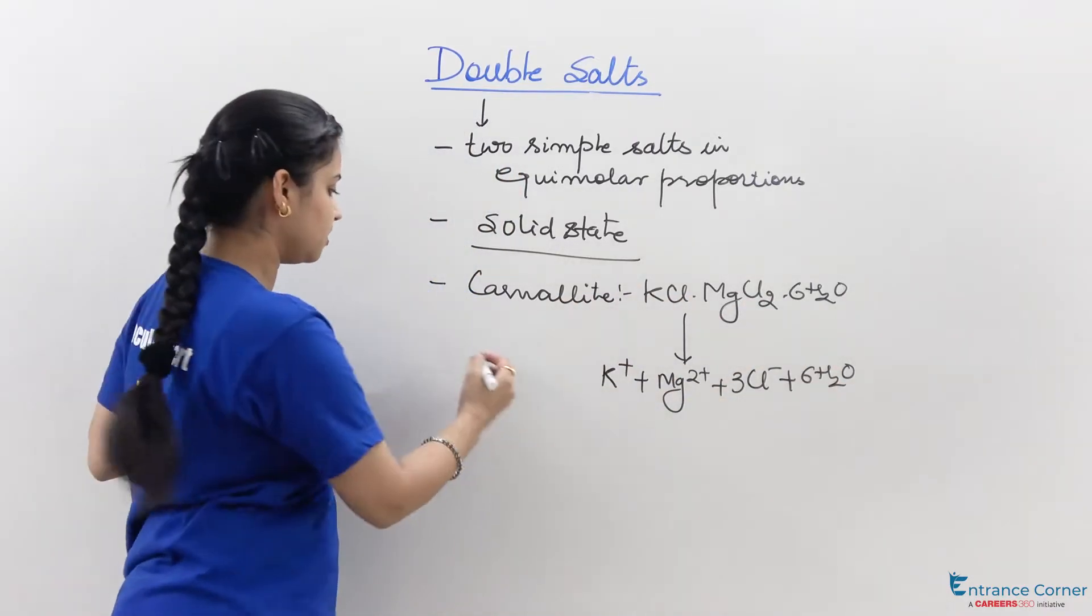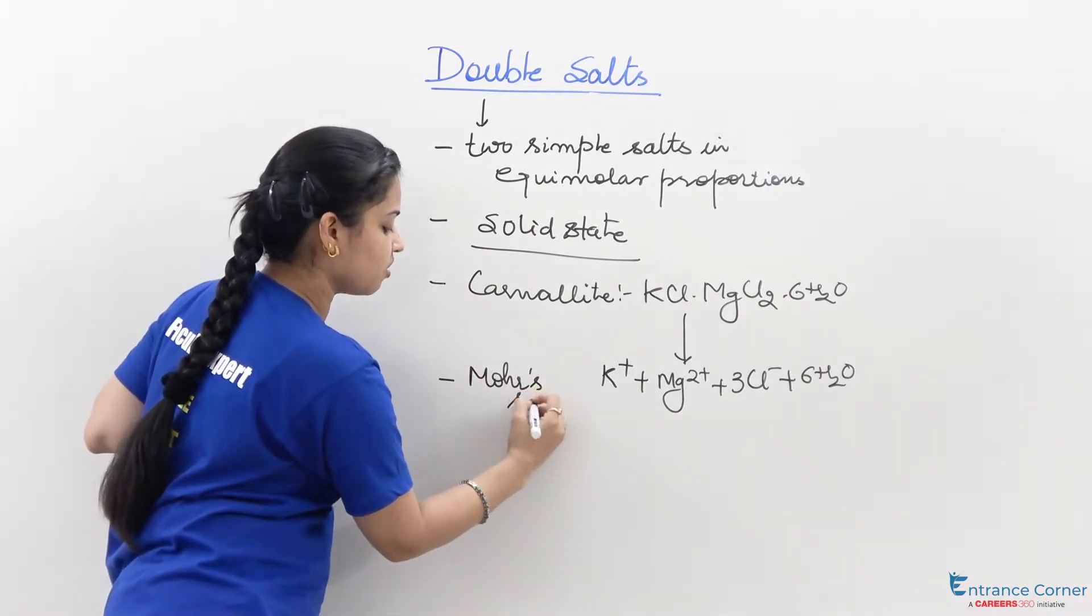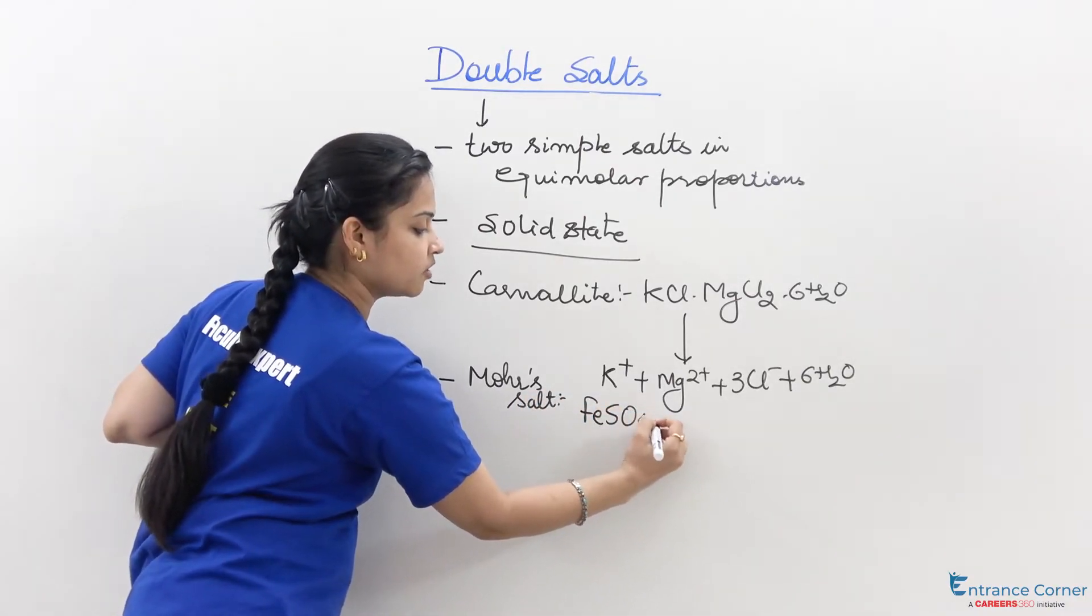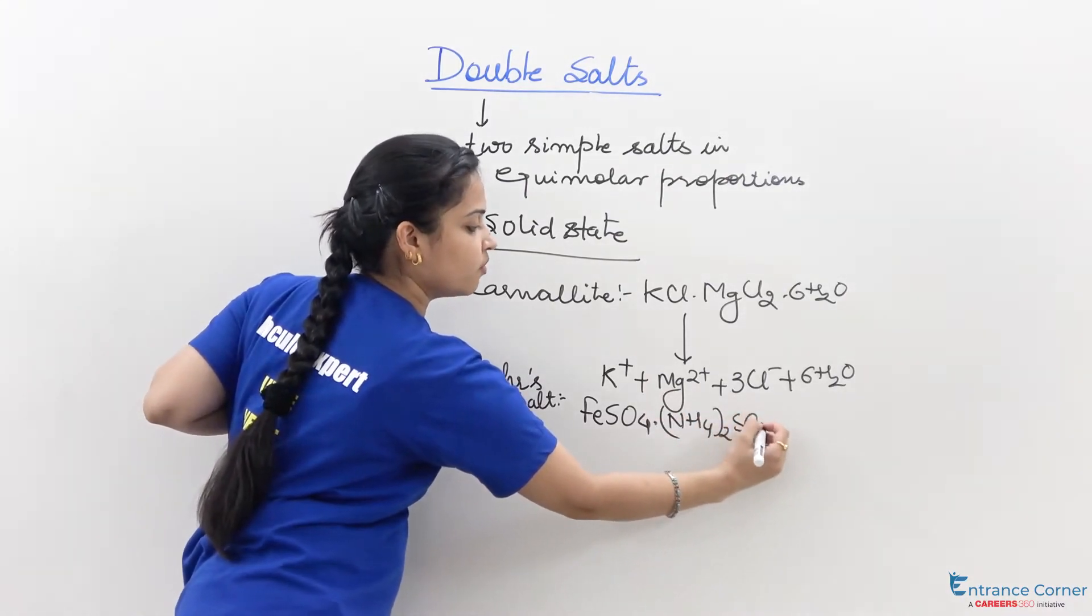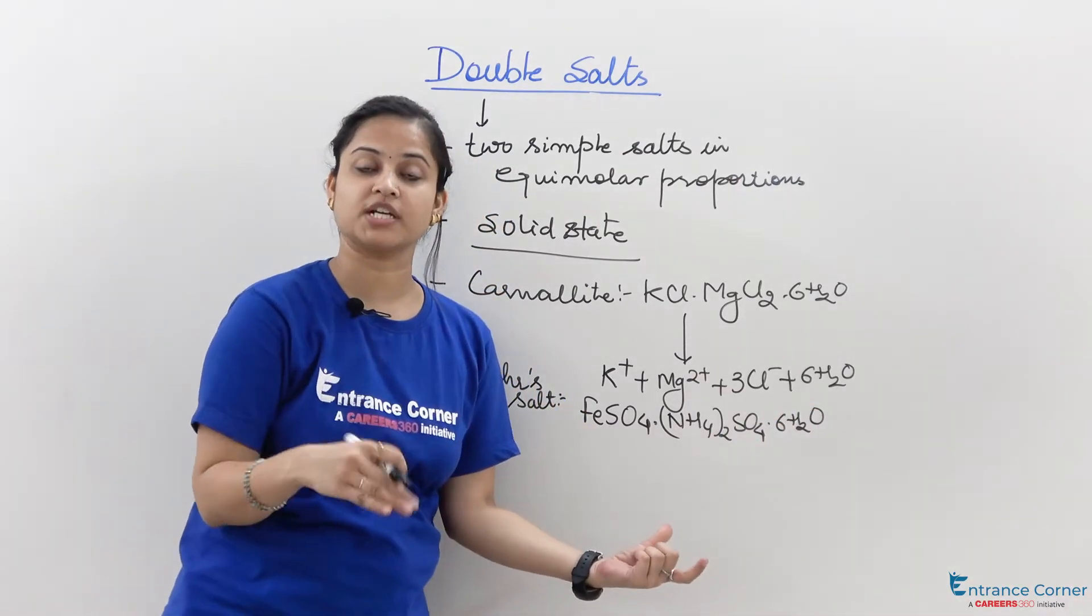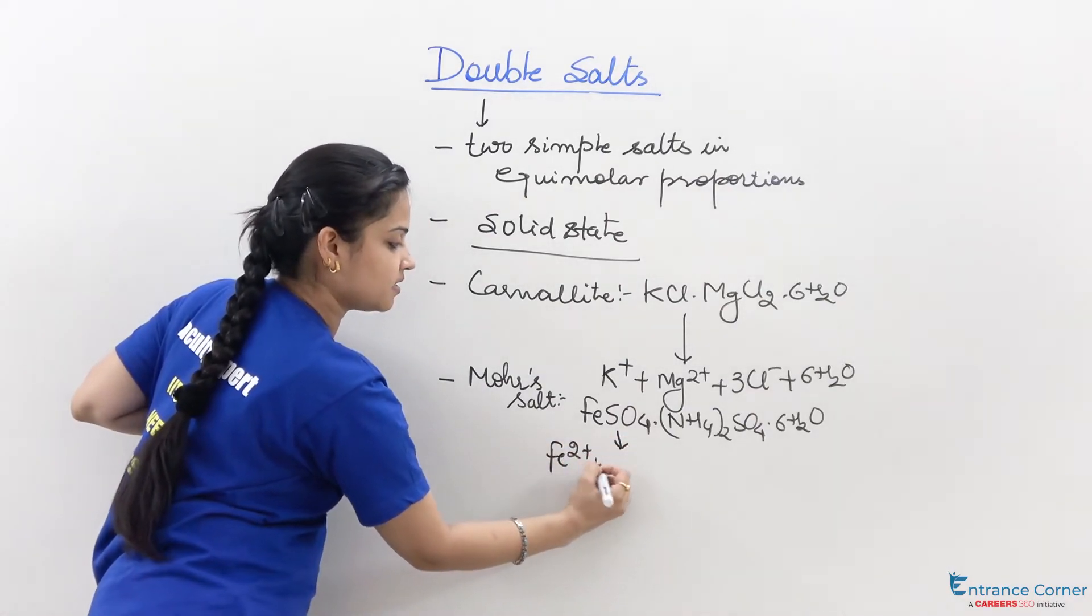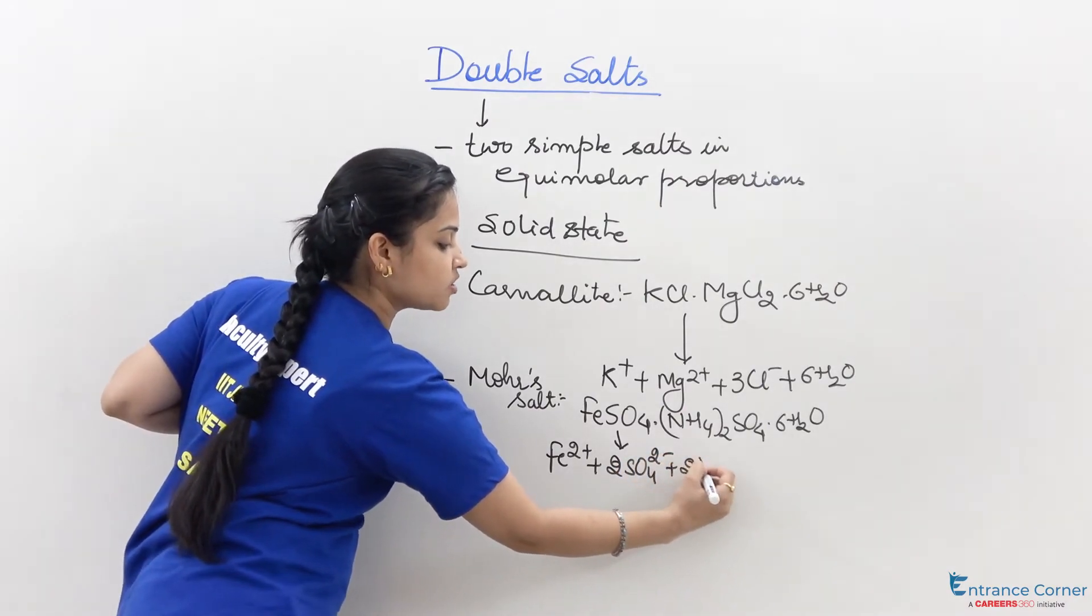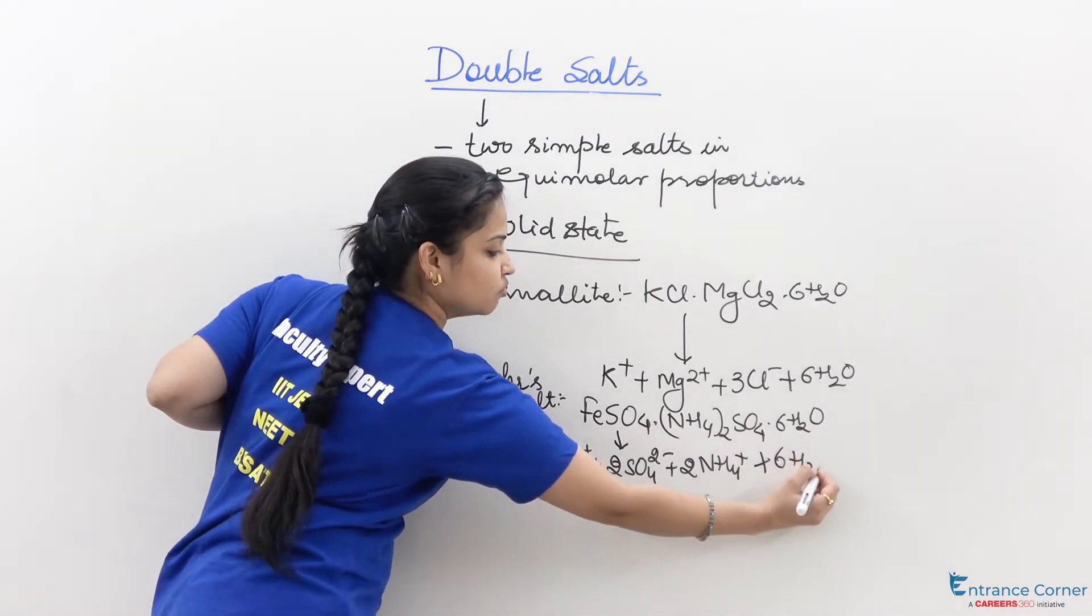Talking about the next double salt, Mohr salt, it has the formula FeSO4.(NH4)2SO4.6H2O. It will also completely dissociate in aqueous solution having the ions Fe2+ plus 2SO42- plus 2NH4+ plus 6H2O.